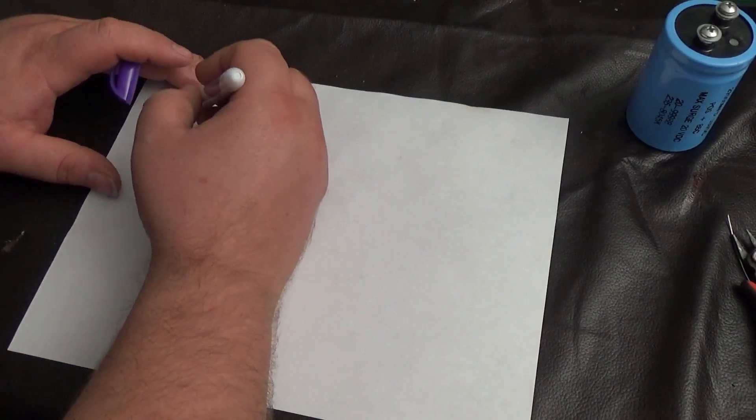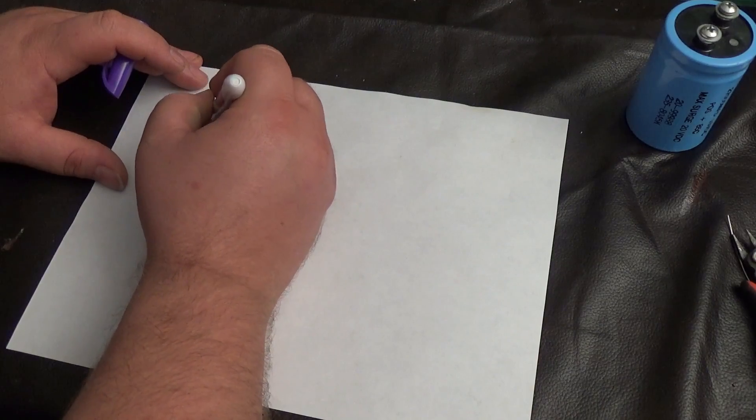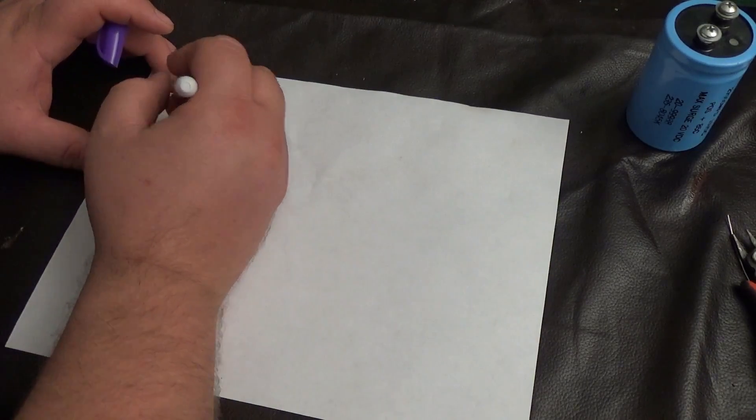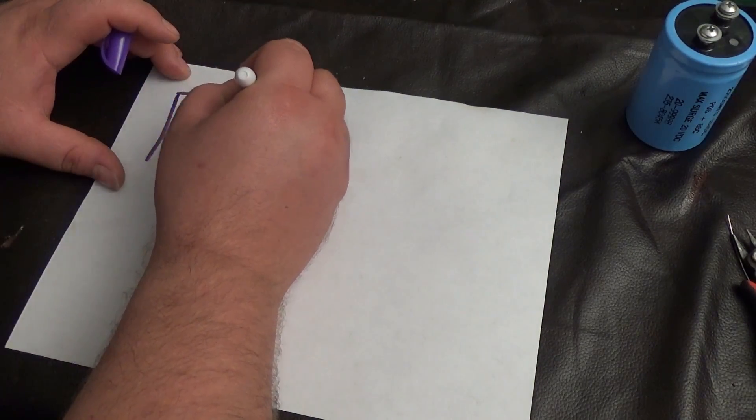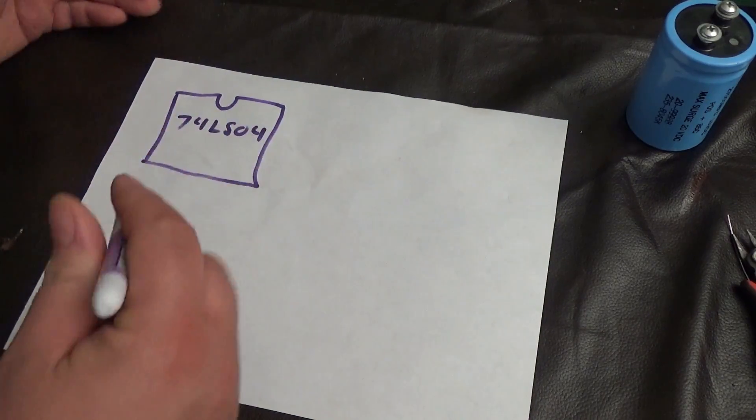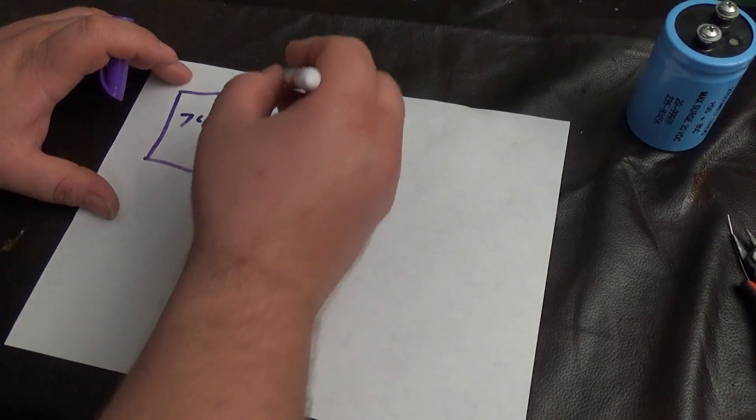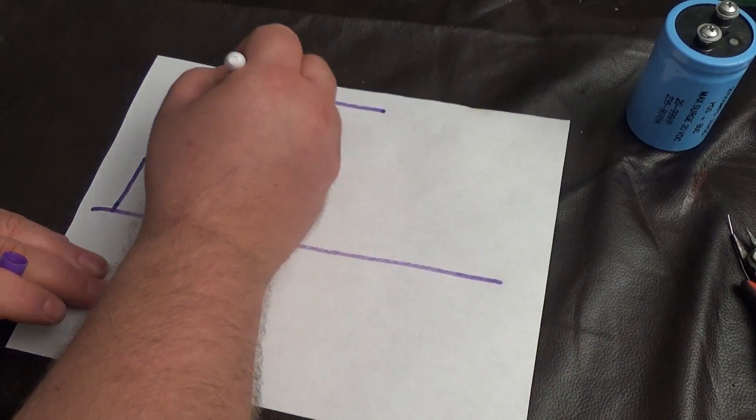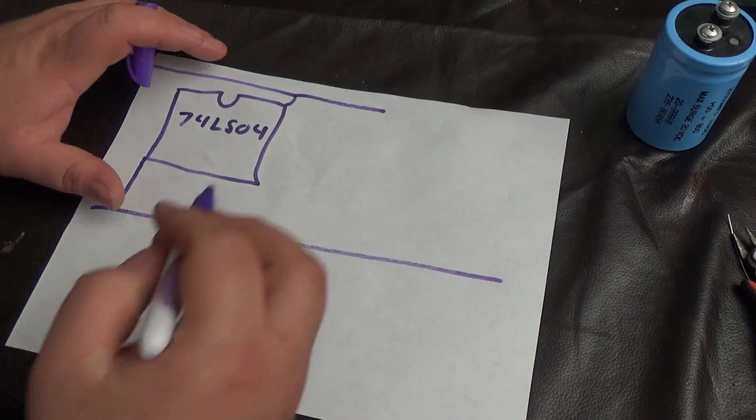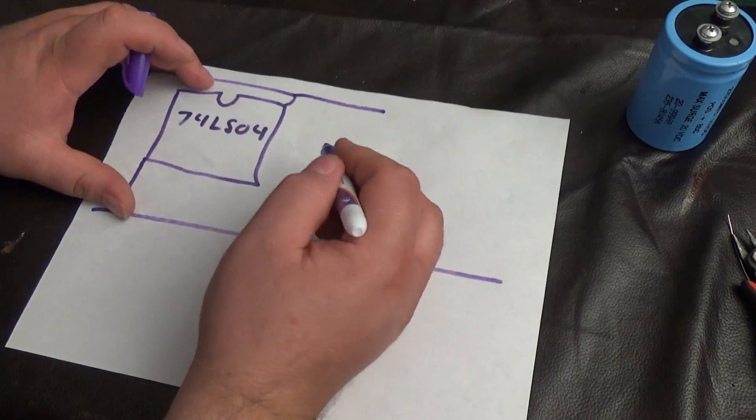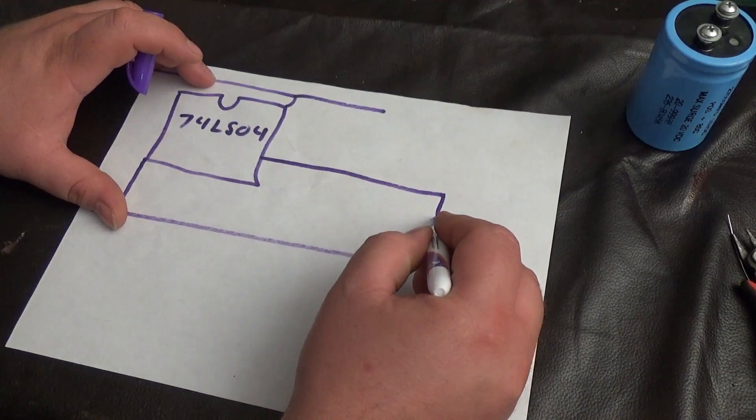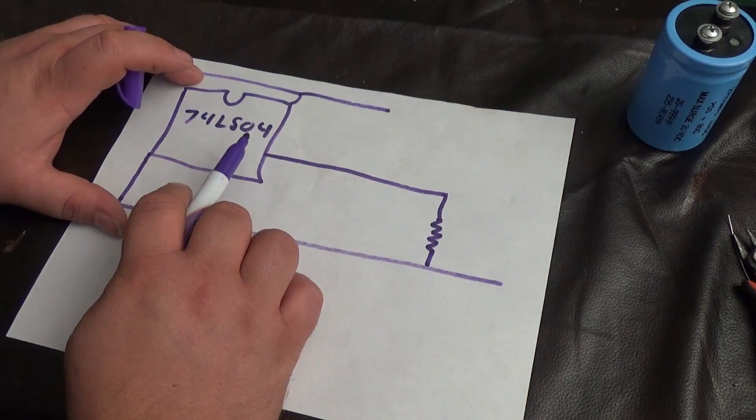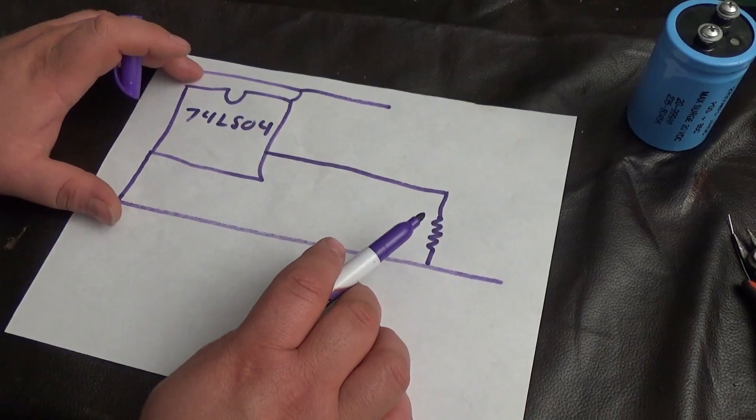For example, let's say we have a 74LS04 inverter chip. And, terrible drawing here. Let's say this is in an oscillator circuit. Well, and we have our power and we have our ground connected. Now, let's say the output of this 74LS04 is going through a resistor to ground. Well, let's say this is a high frequency pulse on the output.